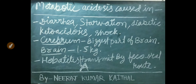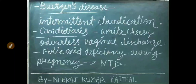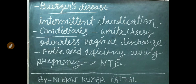Total brain weight is 1.5 kg. Hepatitis A is transmitted by the feco-oral route. In Buerger's disease, intermittent claudication is seen. In candidiasis, white cheesy odorless vaginal discharge occurs. Folic acid deficiency during pregnancy causes neural tube defect.